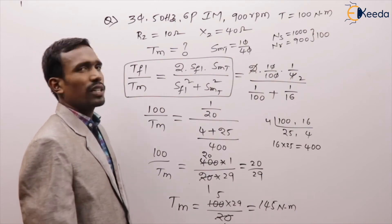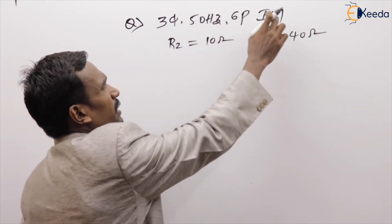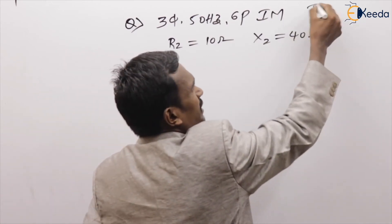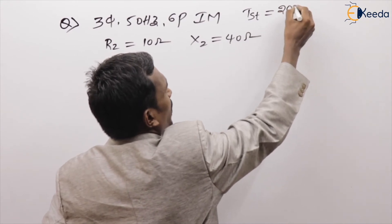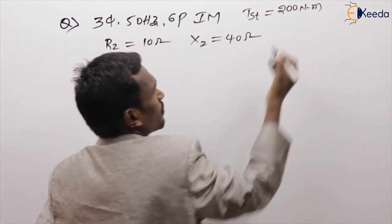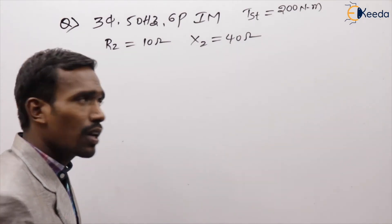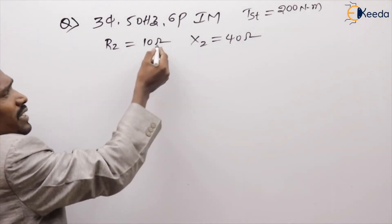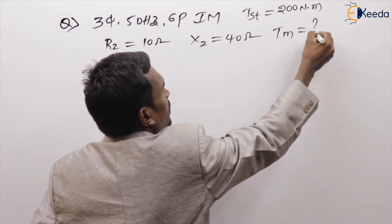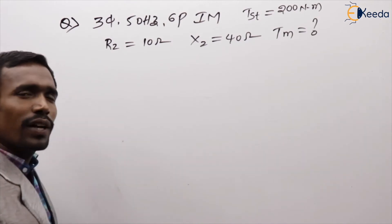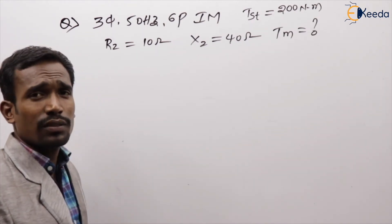Next question on full load to maximum torque: a three-phase, 50 Hz, 6-pole induction machine. Starting torque is 200 Newton meters, rotor resistance 10 ohms, rotor reactance 40 ohms. Find the maximum torque.